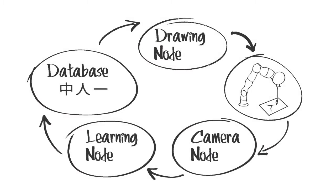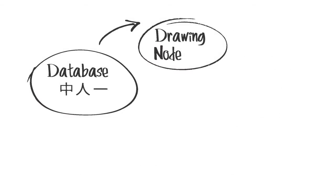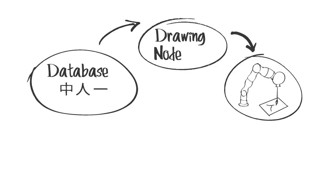The software consists of three nodes and a database. The drawing node gets a prior on how to draw the character from the database and converts it into a set of trajectories that are executed by the robot.